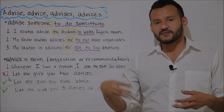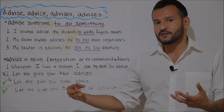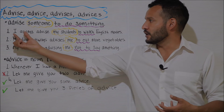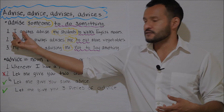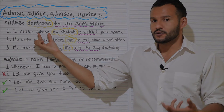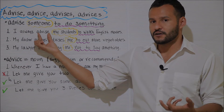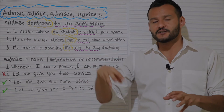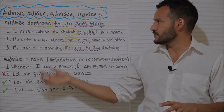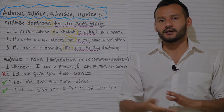For example: I always advise my students to watch English movies as a way to practice their English. Here, 'I' is the subject of the sentence and 'advise' is the main verb. I advise my students to watch English movies. Advise someone to do something.